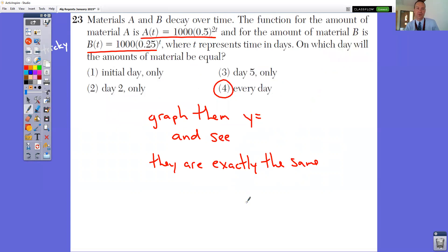In question number 23, this is a hard one too. Materials A and B decay over time, that means they get smaller. The function for the amount of material A is this, and for B it's this, where T represents the time in days. On which day will they be equal? Well, what I would personally do is just type them into Y equals and see where they're exactly the same. You're going to see that they are the exact same graph. You wouldn't think that they are, but they are the same exact graph when you graph them. So they are equal every single day.